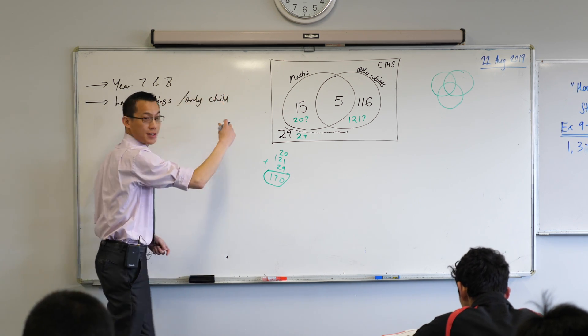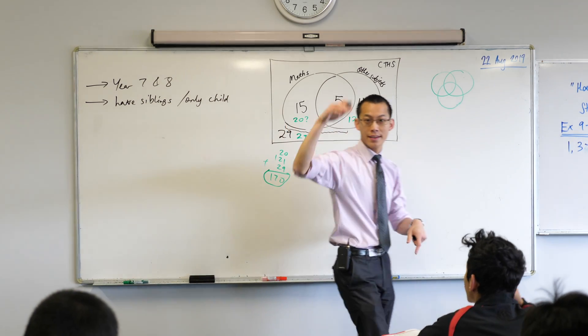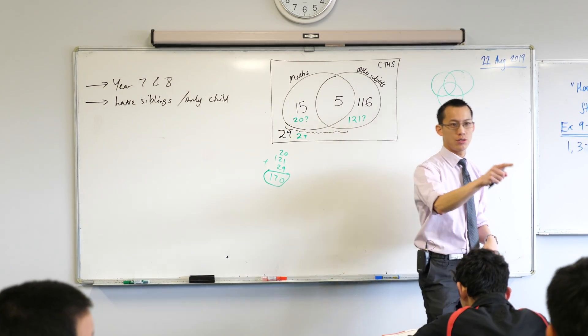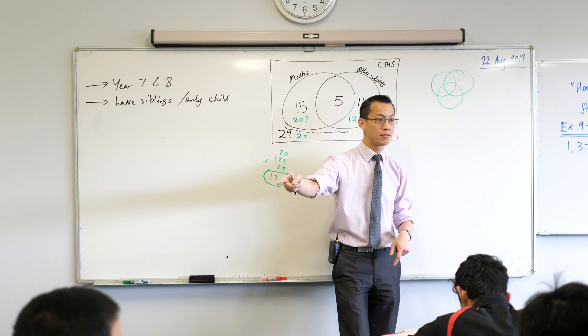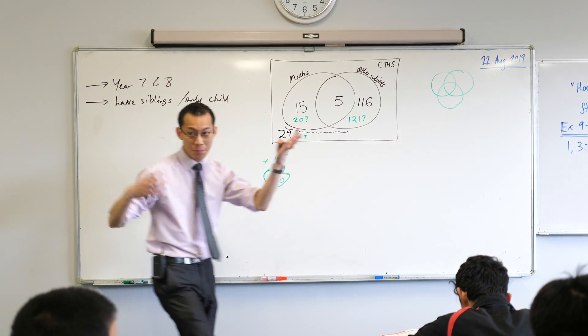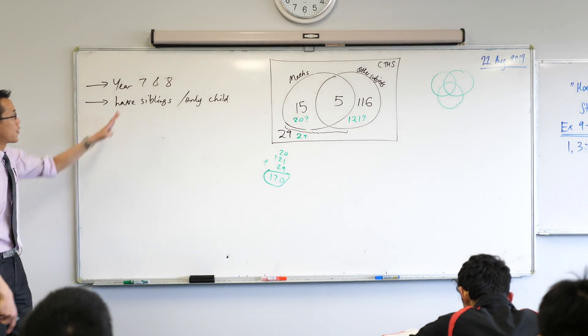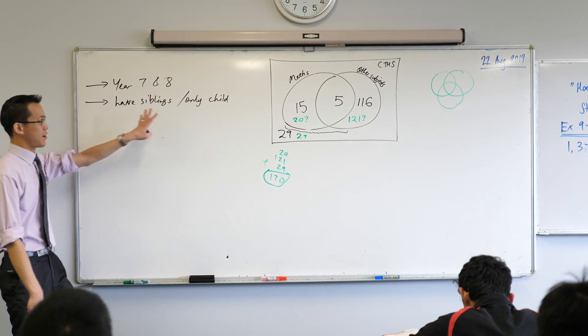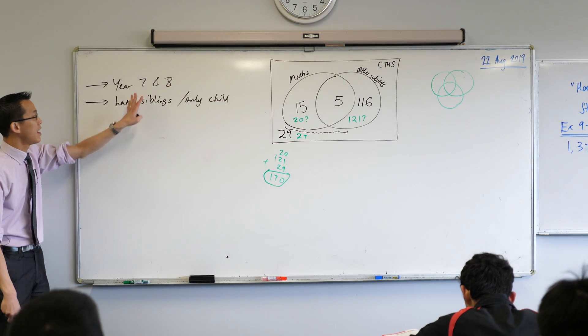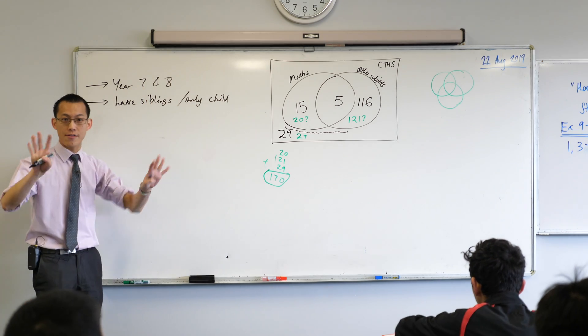Let's say have siblings or only child. By the way, just out of sheer curiosity, how many people are an only child in this room? Hands up. So I'm counting one, two, three, four, five. Five. Thank you, hands down. So let's just suppose we've got this kind of breakdown of people who are only children, people who have siblings, and then we have the Year 7 and 8 breakdown.